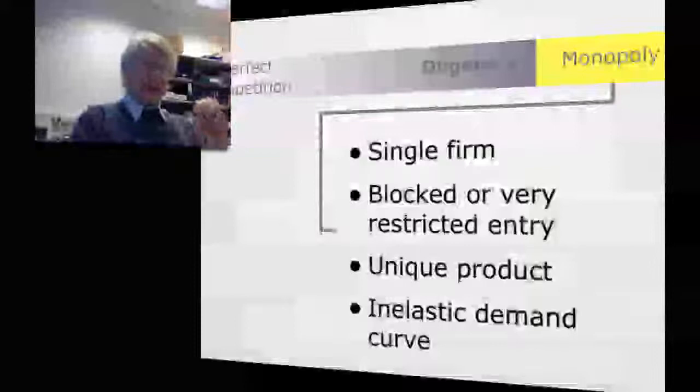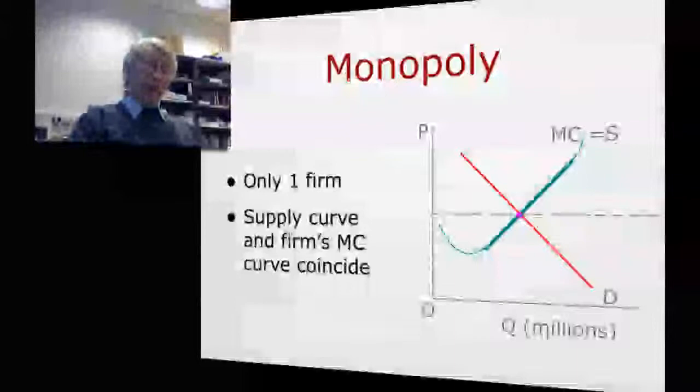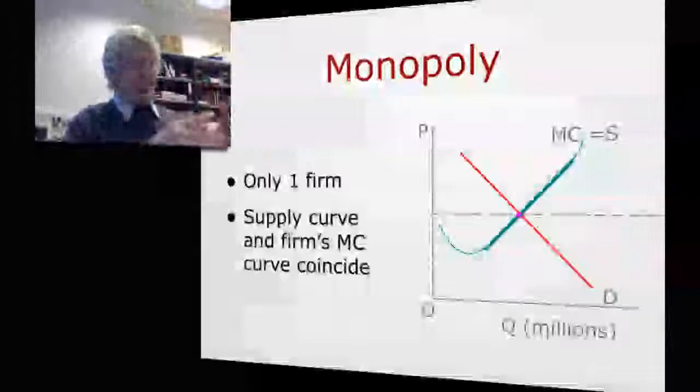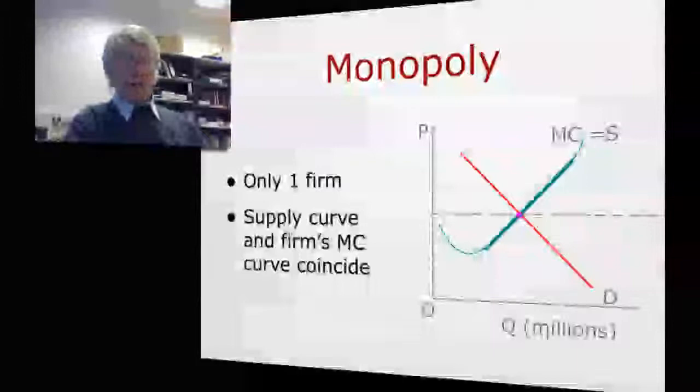Now if we look at the diagram for a monopoly, the market diagram will have a supply curve and demand curve. The supply curve in this case is the monopolist marginal cost curve. It's effectively the appropriately flat bit of the monopolist marginal cost curve. And that's because the monopolist is the only firm in the market. So total supply in the market is provided by the monopolist.